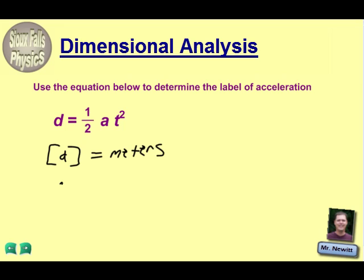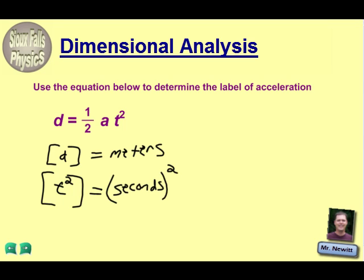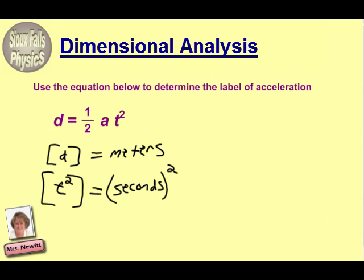And T represents time, and that is T squared. So whatever unit I use for that, which would be seconds, is going to be squared. Now that we've identified our two base labels in this — distance and time are both base labels — now we're ready to find the label for acceleration. And again, that means that acceleration would be considered a derived unit.